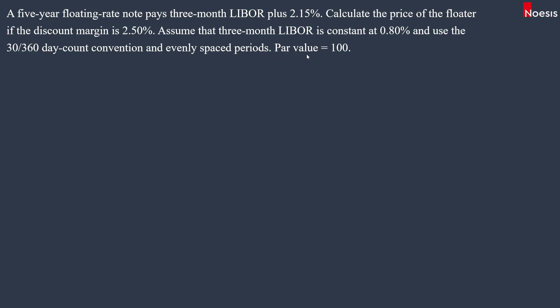Because we assume that LIBOR is constant at 0.8%, we can calculate the price of the floater in the same way that we calculate the price of a fixed rate bond. We'll need to know the number of periods N, the interest rate IY, the PMT which is the coupon, and also the face value or the principal of the bond.